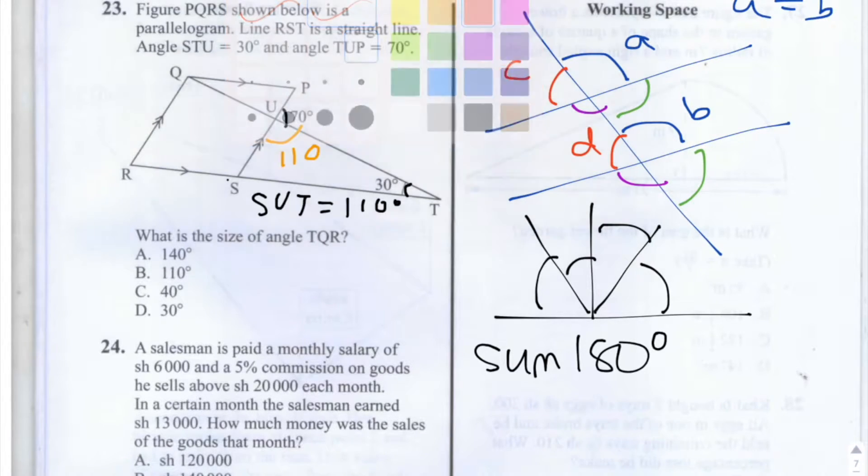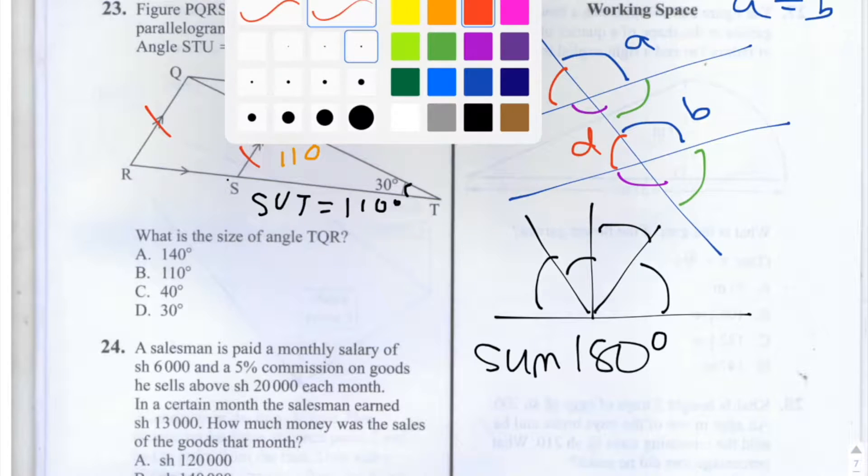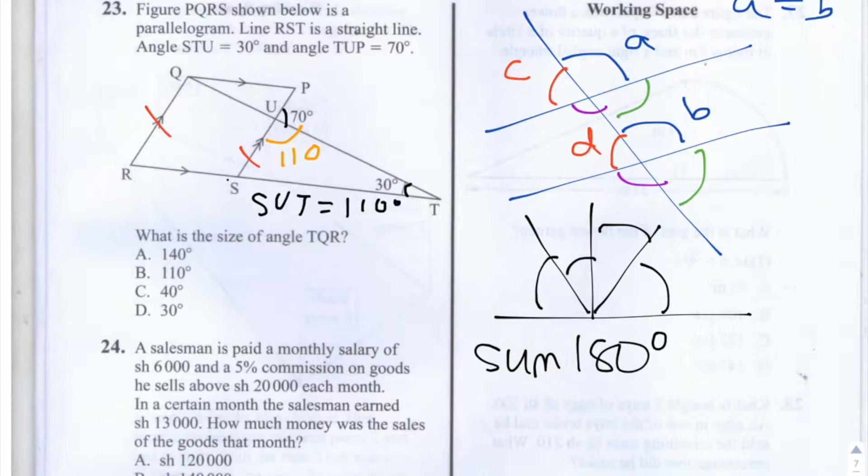Now note that this line here and this line here are parallel to each other, so that means we have a corresponding angle with angle SUT, and that's the angle TQR which we're asked to find, so that will also be equal to 110 degrees. So the answer is B, 110 degrees.